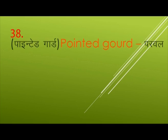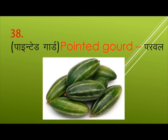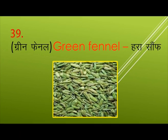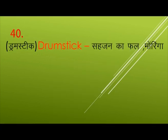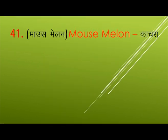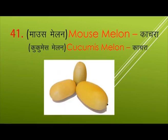Pointed Gourd — Parwal. Green Fennel — Hara Saunf. Drumstick — Sahjan. Mouse Melon — Kachra.